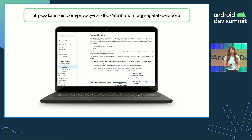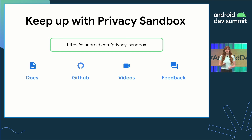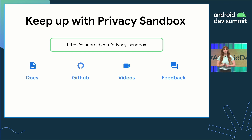You can learn more about designing and receiving aggregatable reports on our documentation. Now that you've seen some examples of the ways you could implement advertiser use cases with the Privacy Sandbox, we encourage you to go try out the APIs. You can find sample apps on our GitHub page, development guides, and videos to help you get started. Please reach out if you have any feedback for us along the way. The earlier we receive feedback on the Privacy Sandbox, the better we can address it to make the best product possible. Thank you so much for watching.